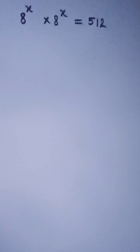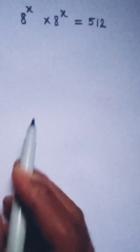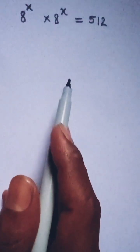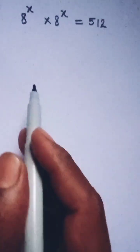Hello everyone, we have this problem: 8 to the power x times 8 to the power x equals 512. How can we solve this problem?